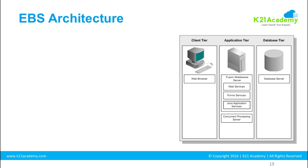Welcome back to lesson two of module one of Oracle eBusiness Suite Apps DBA training. In this lesson we are going to look at the architecture of Oracle eBusiness Suite — the three-tier architecture: client tier, application tier, and database tier. But before that, let's look at the history of Oracle eBusiness Suite and what we have covered so far in this module.